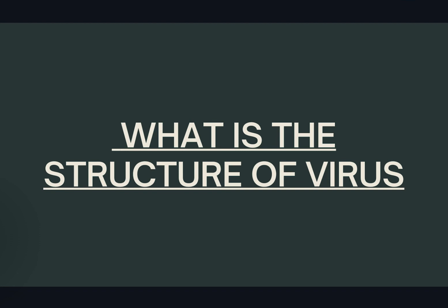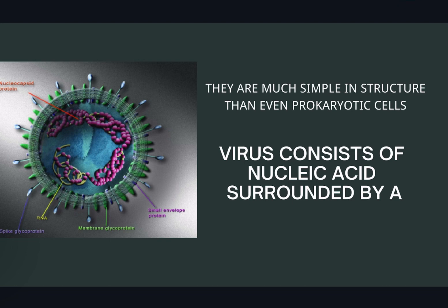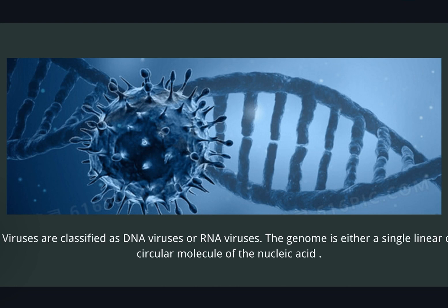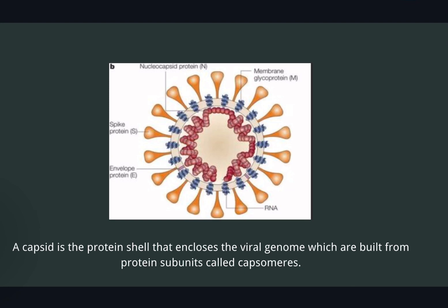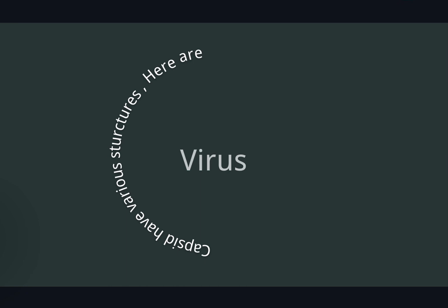What is the structure of a virus? Viruses are much simpler in structure than even prokaryotic cells. Viruses consist of nucleic acid surrounded by a protein coat. Viruses are classified as DNA viruses or RNA viruses. The genome is either a single linear or circular molecule of nucleic acid. A capsid is the protein shell that encloses the viral genome, built from protein subunits called capsomeres.